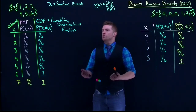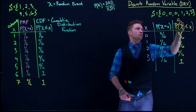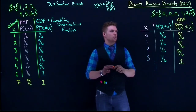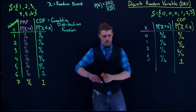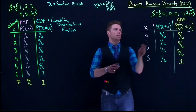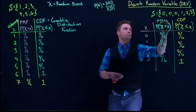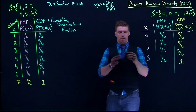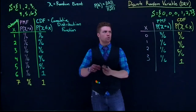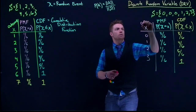You will see these things written in shorthand: the last column is the CDF — cumulative distribution function; the middle column is our PMF — probability mass function; and the first column is our outcomes or support.